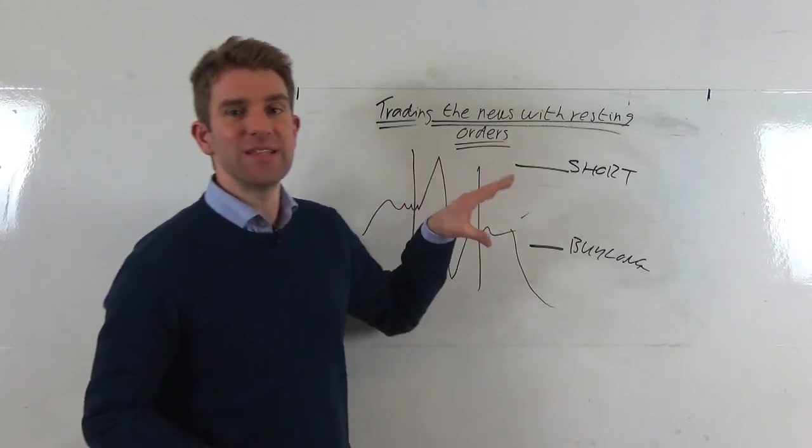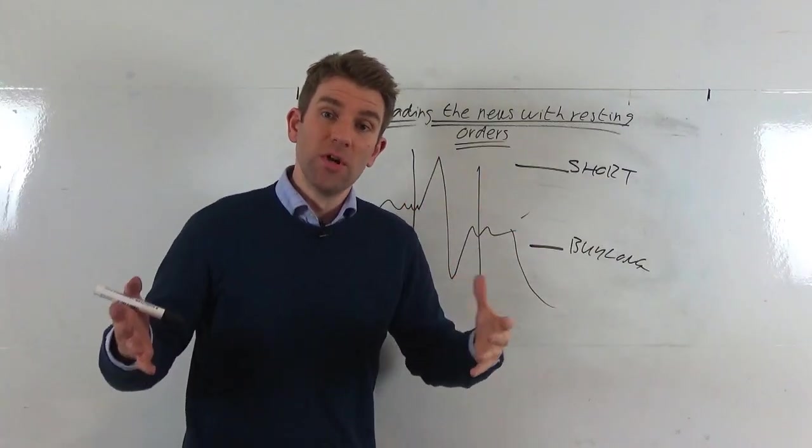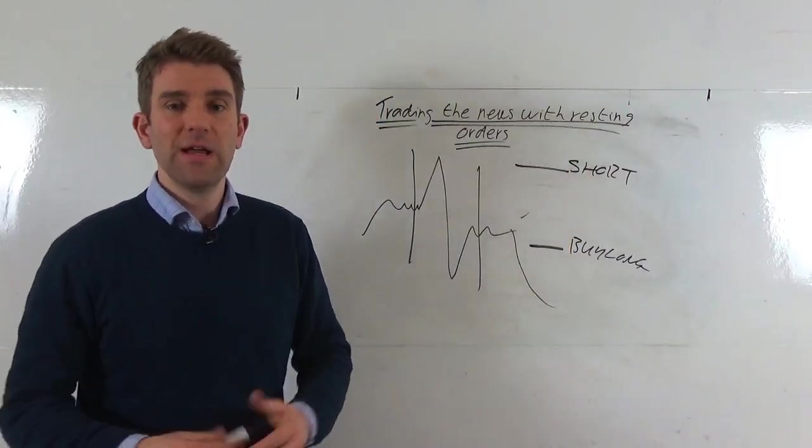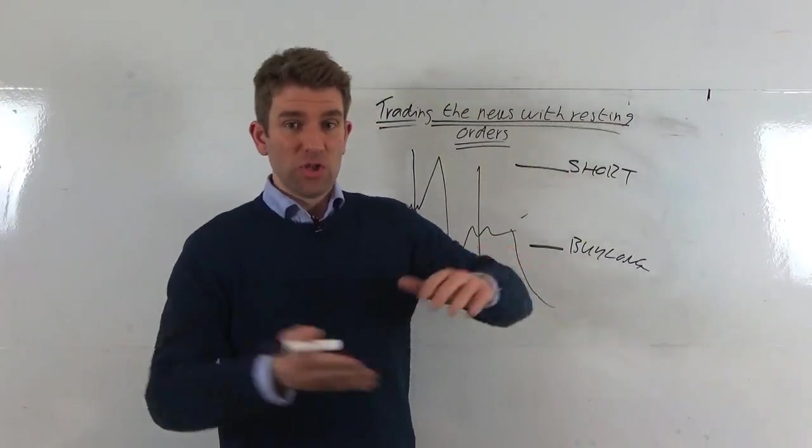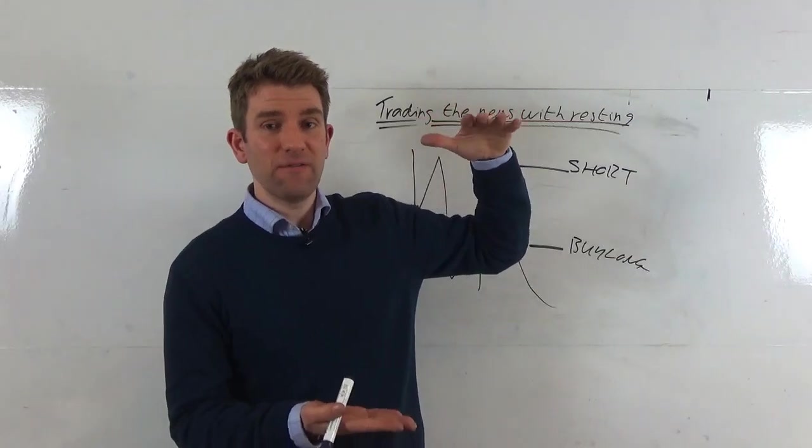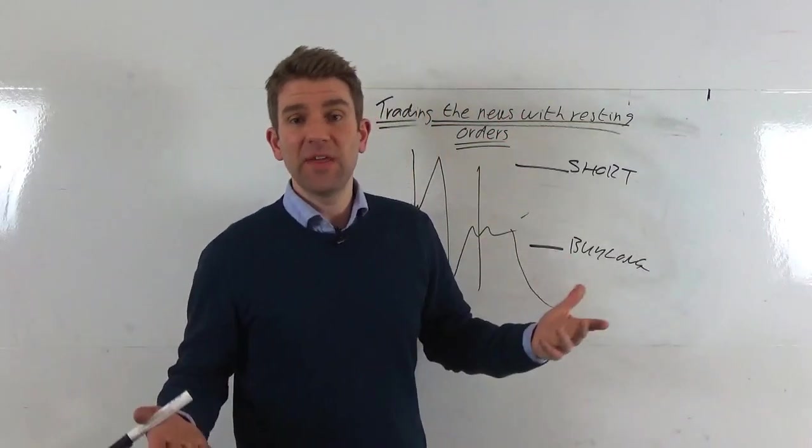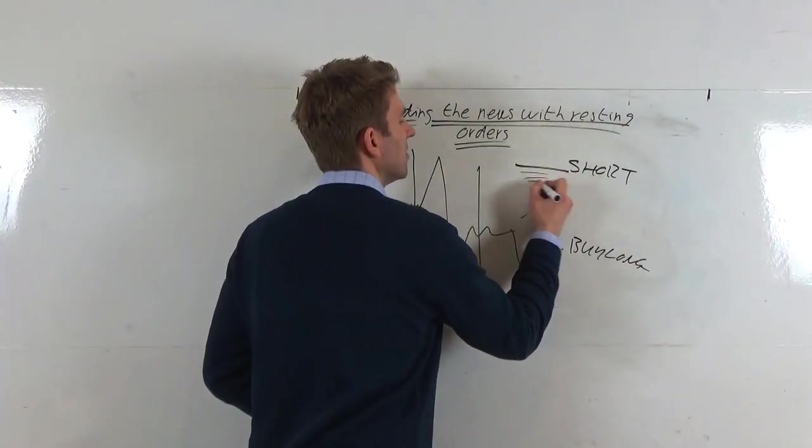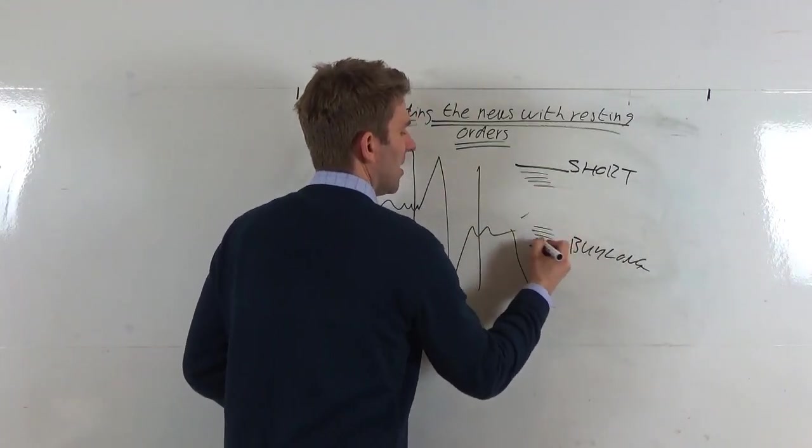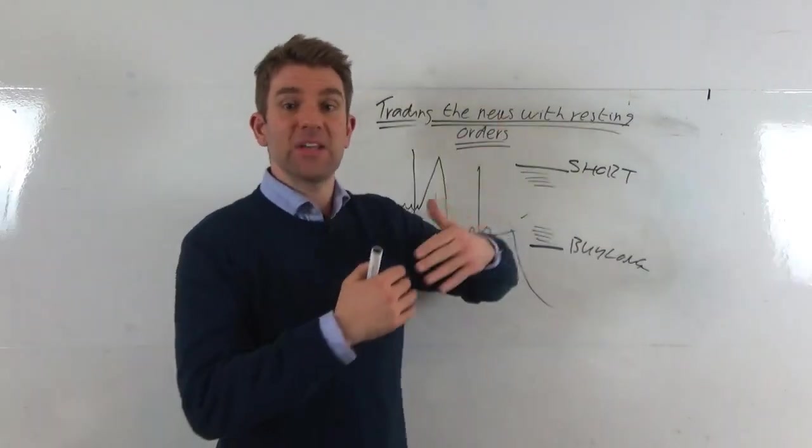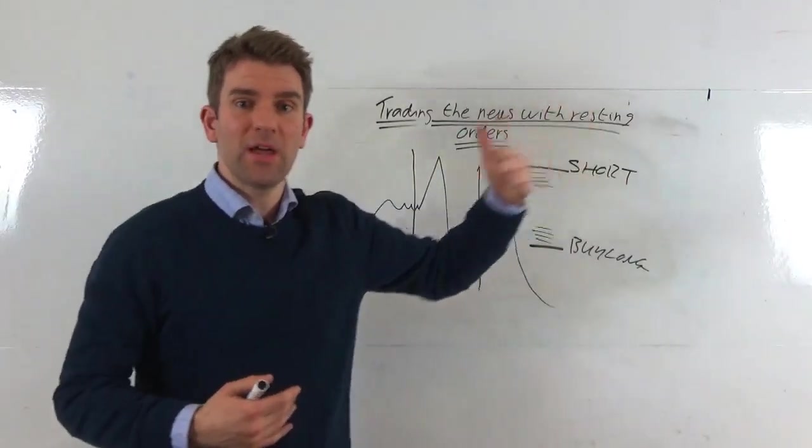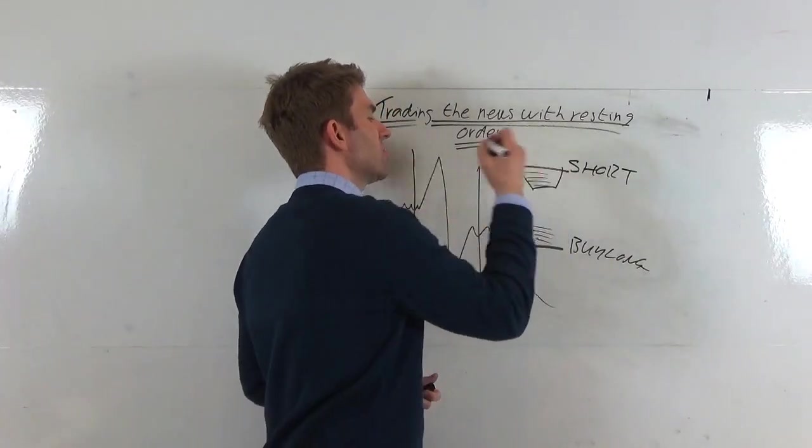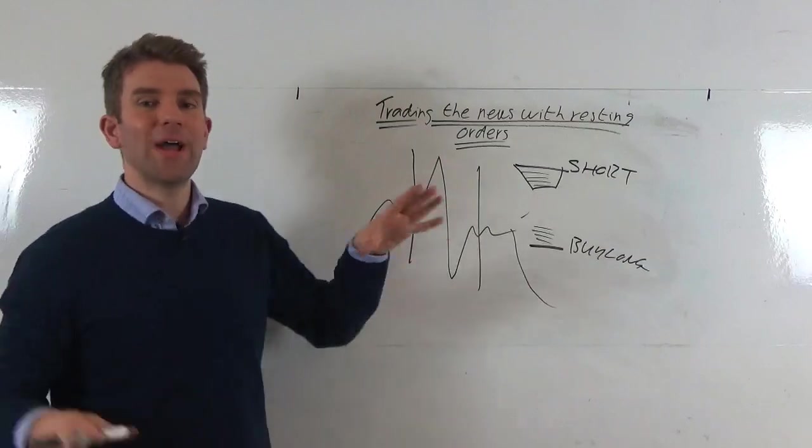Now you've got a decision to make. The wider you go, the less likely you're going to get filled, but potentially the bigger the trade if it pings. Do you stagger orders and have lots of little orders, resting buy orders there which as the market goes through it catches all of them then comes back? That's my preference for this trade. But where do you start that?